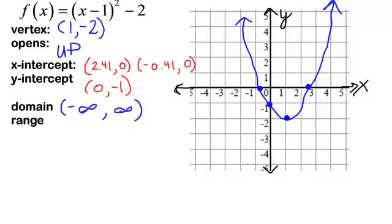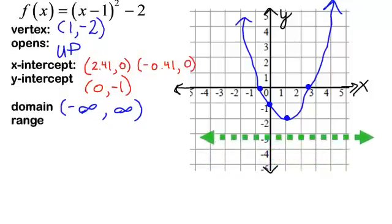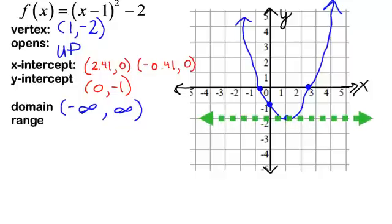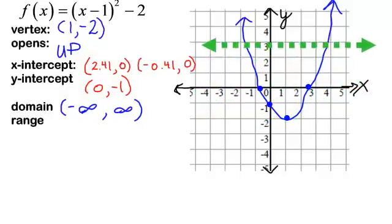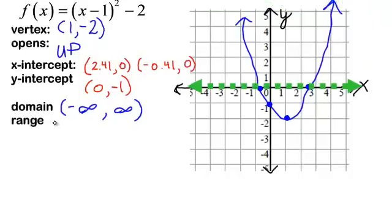Now for my range, I do not have any y-values included when the y's are negative 5, negative 4, or negative 3. My range does not start until right here at negative 2, and then as I go towards infinity, I have y's included in my graph. So my range will start at negative 2. It does include negative 2, which is why I'm putting a bracket, so it will go from negative 2 to infinity.